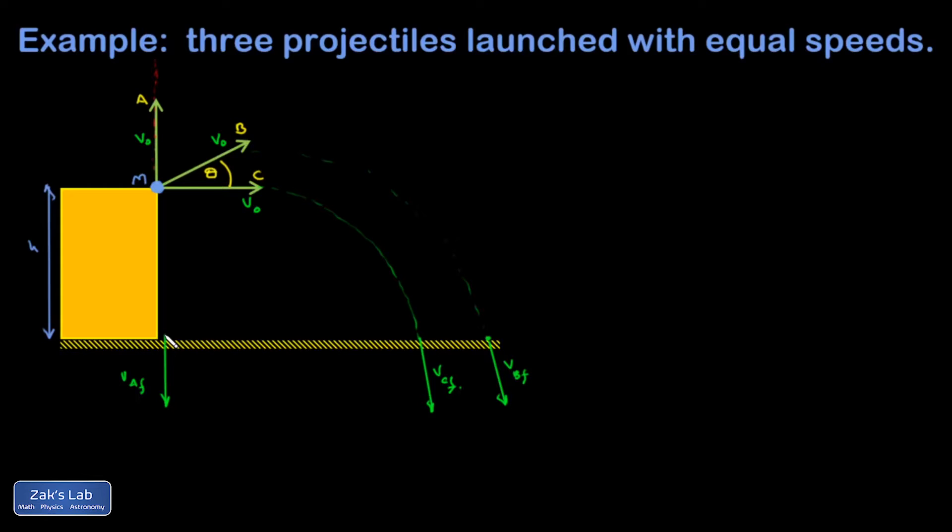All right, so that's the real quick qualitative talk through the problem. So I know they hit the ground at the same speed. Let's go ahead and prove it a little bit more precisely. So I'm going to put the origin on the ground. Y equals H is going to be my launch height.